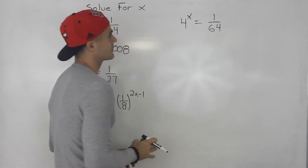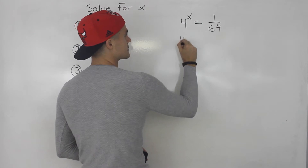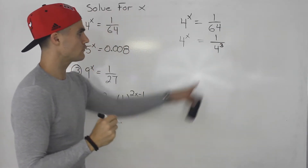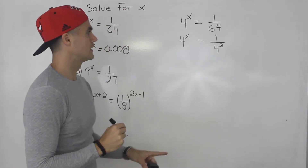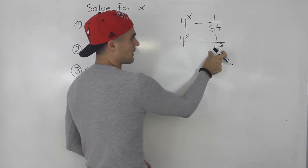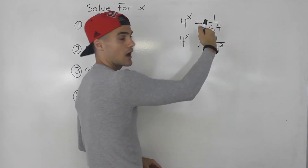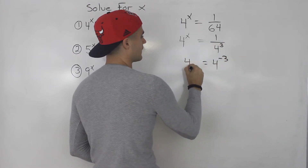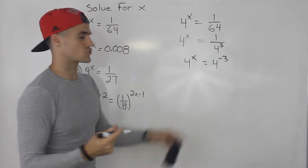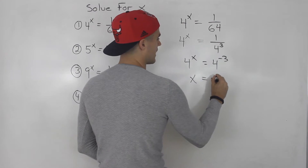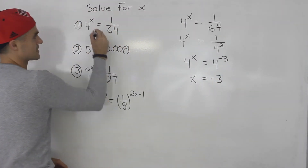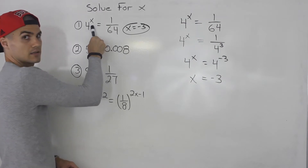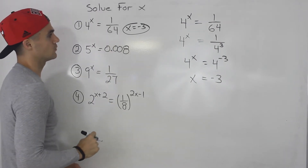So we've got 4 to the x equals 1 over 64. Notice that 64 we can change to 4 to the power of 3 — 4 to the power of 3 equals 64. The problem is that 4 to the power of 3 is in the denominator, so we bring it up: 1 over 4 to the power of 3 is the same as 4 to the power of negative 3. Now we've got 4 to the x equals 4 to the negative 3 — same base, drop the bases — x equals negative 3. That's the answer for number 1. You can check your answer by plugging in that value to see if the left side and right side are equal.